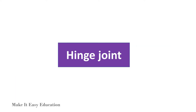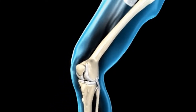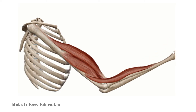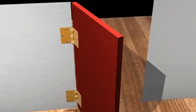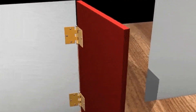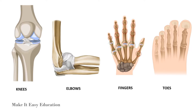Hinge joint: A hinge joint allows only back and forth movements. Hinge joints function much like the hinge on a door. This type of joint is found in the knees, elbows, fingers, and toes.